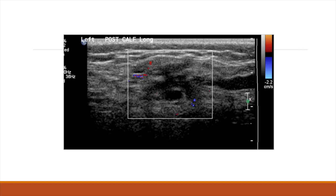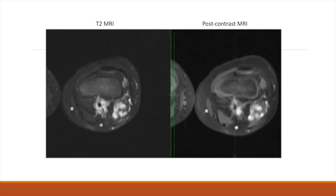Here is another example where we do not see a discrete mass. Again, we see hypoechoic spaces, although they are much smaller in this image. Again, we have color Doppler on, but do not see any flow within the hypoechoic channels. Like our previous example, this is consistent with a lymphatic malformation, but could also be a venous malformation with very slow flow. To differentiate between venous and lymphatic malformations, we will again look at MRI.